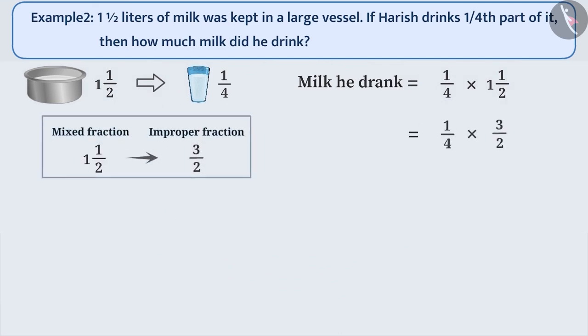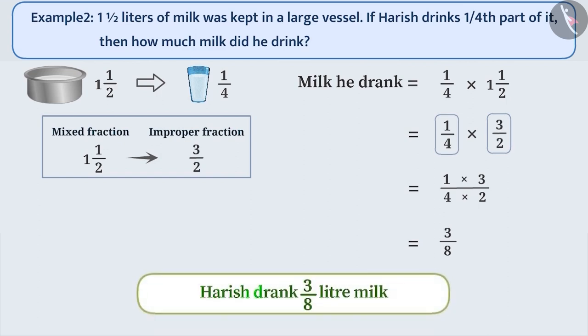Now, let's find out what will be the product of one-by-four and three-by-two. In the previous video, we learned that in order to multiply two fractions, we multiply their numerators and their denominators separately and write the result as the product of the numerators divided by the product of the denominators. So, numerators 1 into 3 is equal to 3 and denominators 4 into 2 is equal to 8. One-fourth into 3 by 2 is equal to 3 by 8. Hence, we can say that Harish drank three-eighths of a liter of milk.